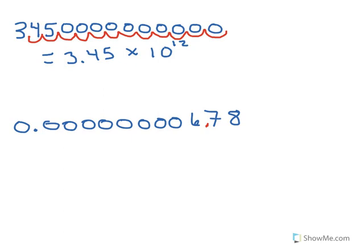And now we're going to count places back to the original decimal point. So in this case we've got one, two, three, four, five, six, seven, eight, nine places back.